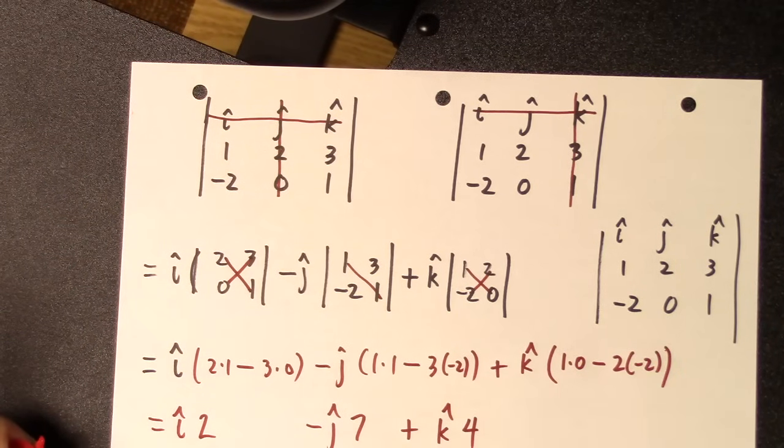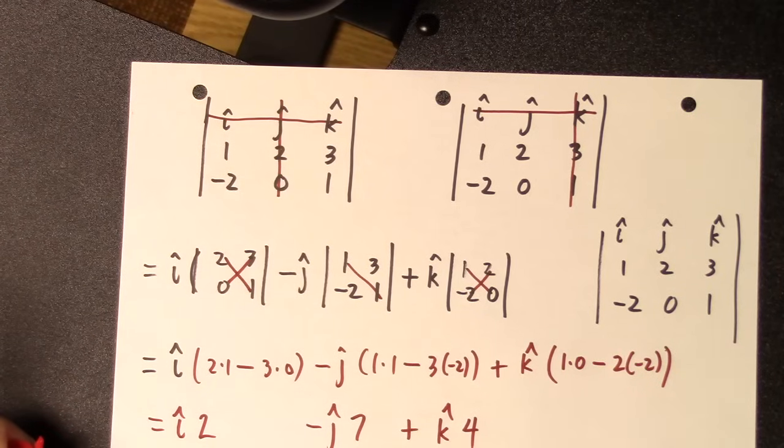So your answer is going to be 2 i hat minus 7 j hat plus 4 k hat.